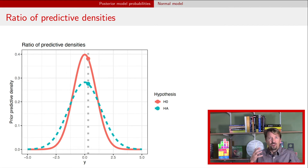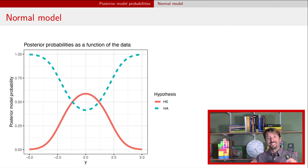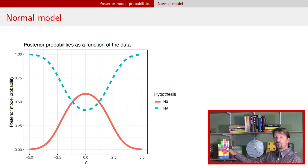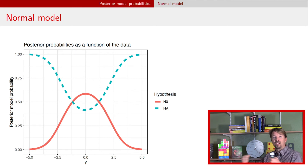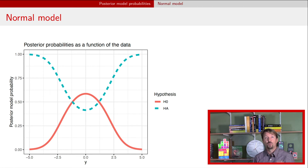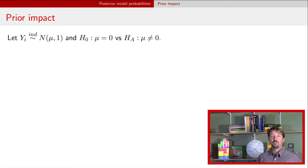To build intuition, let's look at a plot where everything is held constant except the observed data value y, shown on the x-axis. When y is close to zero, there is a relatively high posterior probability that the null hypothesis is true — seen as a peak near zero. As the data gets farther from zero, support for the null hypothesis decreases and support for the alternative increases, so the null's probability goes down and the alternative's goes up.